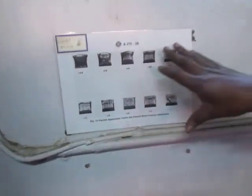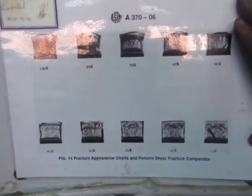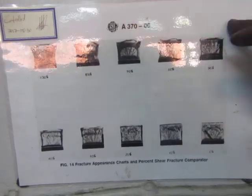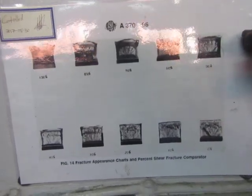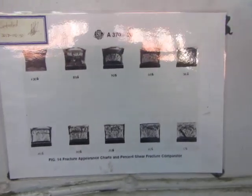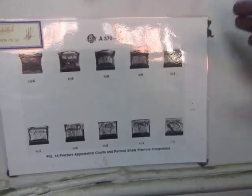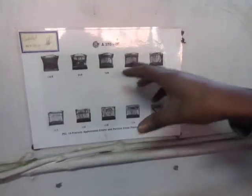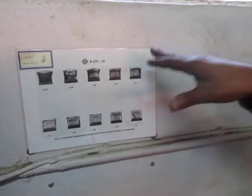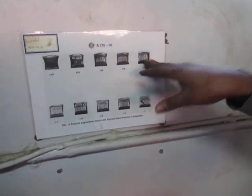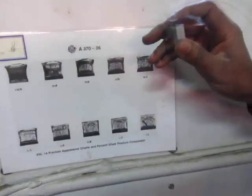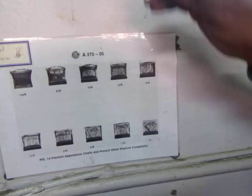I'm going to attach this chart to my report. This is according to ASME 870. It tells you about the percentage of ductility of the tested piece according to what you see here — specifically how the sample looks after it has been broken.